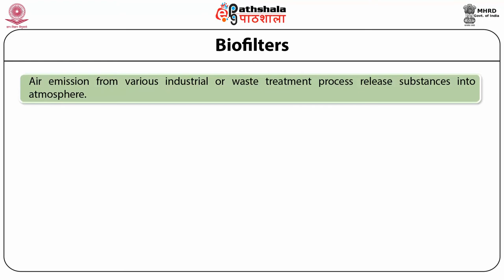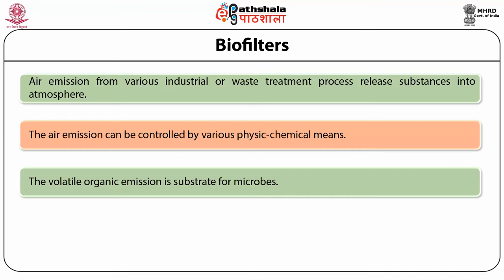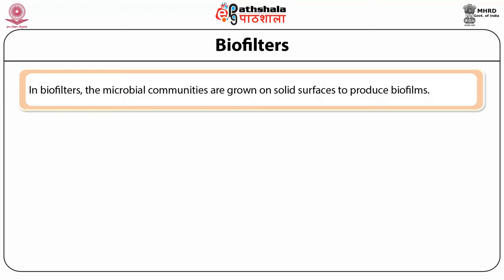The next procedure is bio-filters. Air emissions from various industrial or waste treatment processes release hazardous substances into the atmosphere. These can be controlled by physicochemical means such as condensation, scrubbing, and adsorption, but these processes are costly and difficult to operate. Volatile organic emissions are substrates for microbes, hence the use of microorganisms through bio-filters like trickling bio-filters and bio-scrubbers. Bio-filters are solid surfaces with microbes grown on them that are able to degrade pollutants in industrial air emissions.